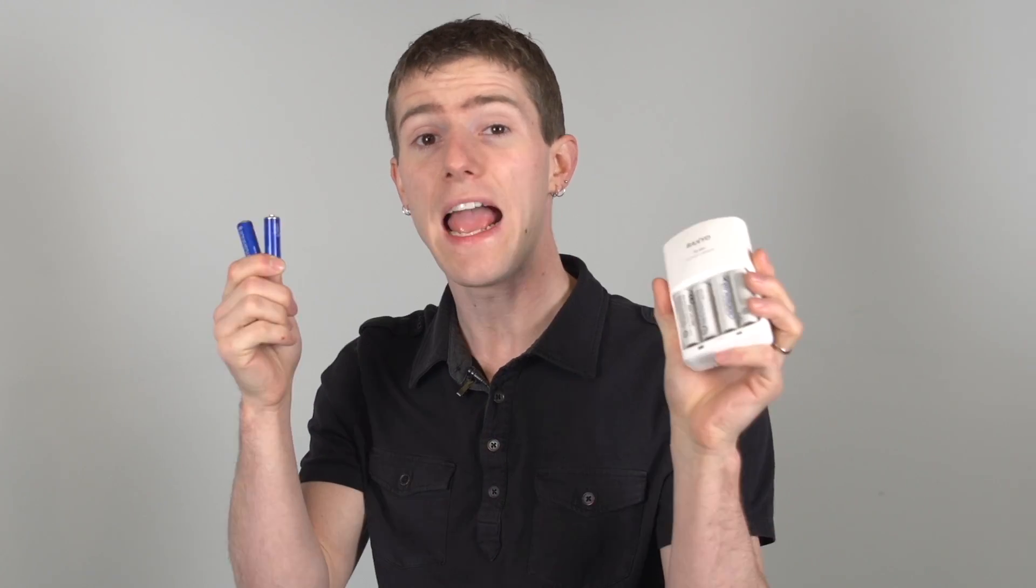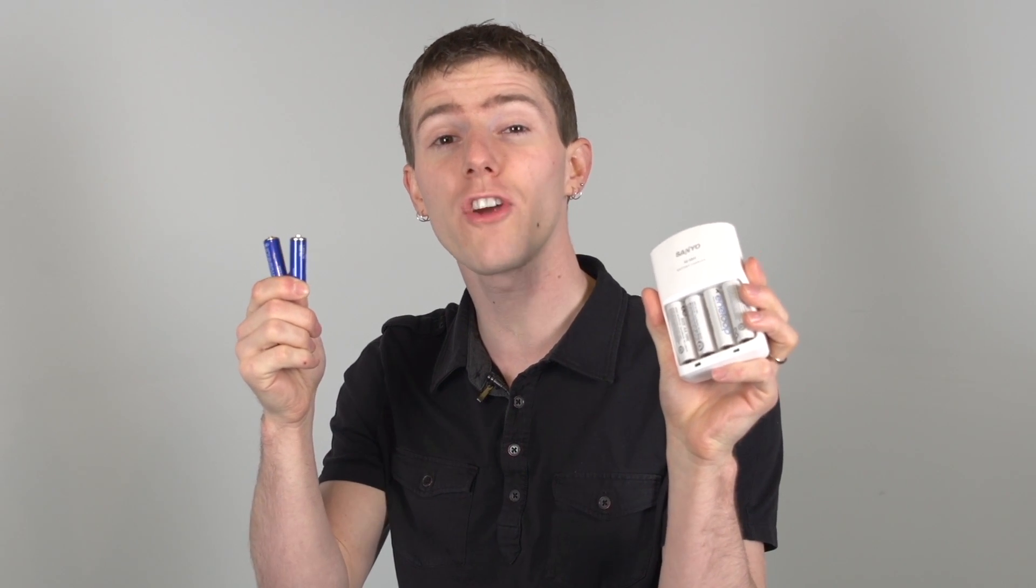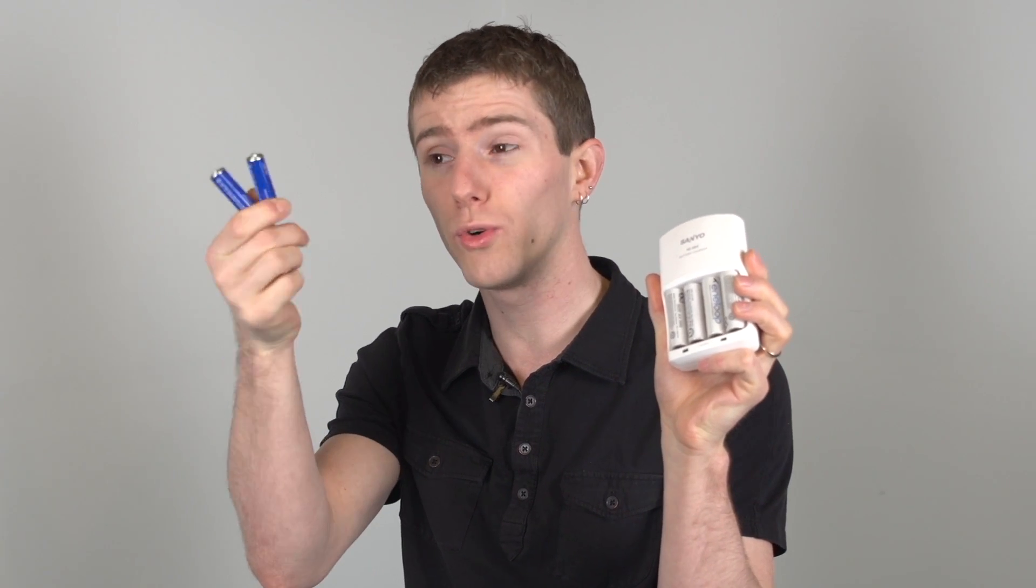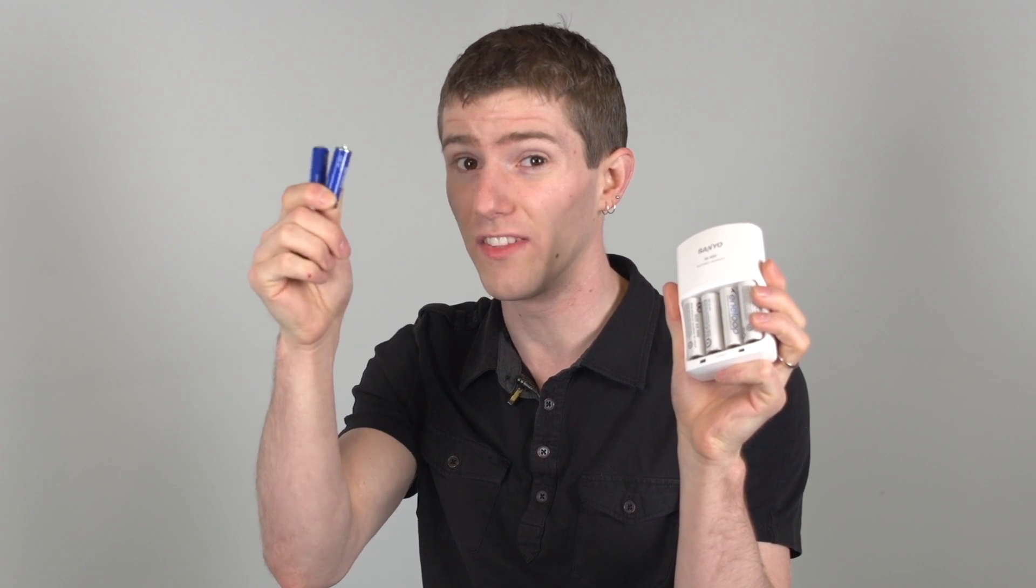Disposable batteries like these are convenient. You can pick them up anywhere, and they have a longer life cycle per charge, of which they only get one, than rechargeable batteries like these Sanyo Eneloops. Eneloop batteries, for example, can be recharged as many as 1,500 times, making each one of these batteries equivalent to a lot of these ones.